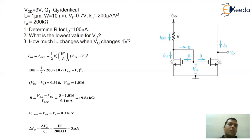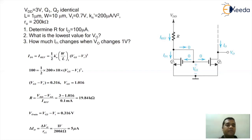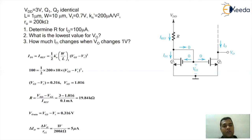To calculate the minimum value of VO: since VO equals VDS, the minimum VO occurs at the boundary of saturation, so VO(min) = VGS − VT = 0.316V. That is the minimum value of VO.